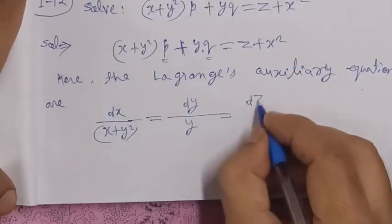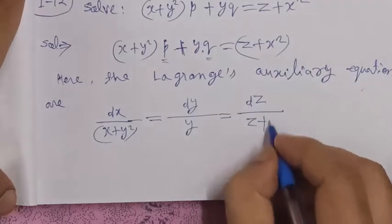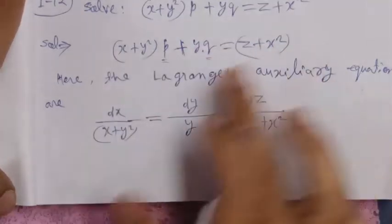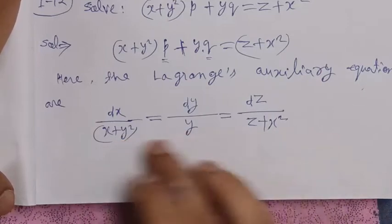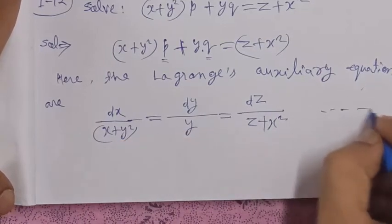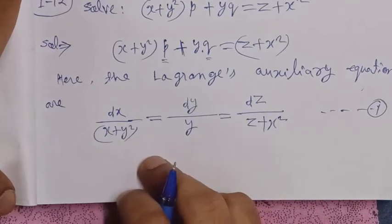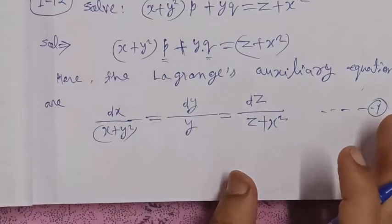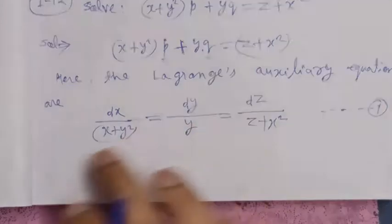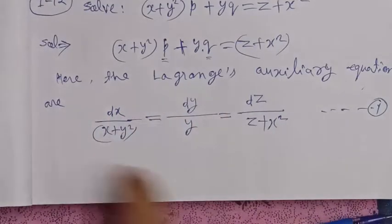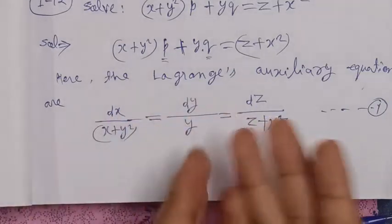This can be written as z plus x squared. From this given differential equation, the auxiliary equation is equation number one. To find the solution, we note that we can multiply and add such that the value becomes zero.